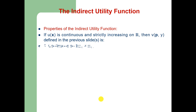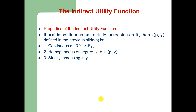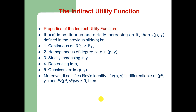The indirect utility function has several properties. First, it is continuous on the non-negative Euclidean space. Second, it is homogeneous of degree zero in prices and Y, meaning that if both prices and income increase proportionally there is no difference in consumer equilibrium. Third, this indirect utility function is increasing in Y and decreasing in prices P, and it is quasi-convex in prices and income of the consumer.